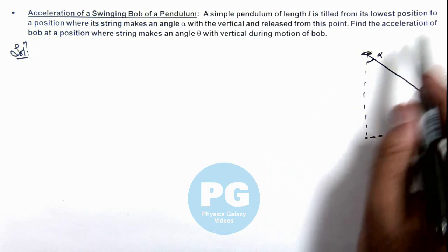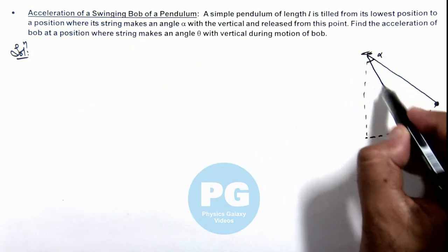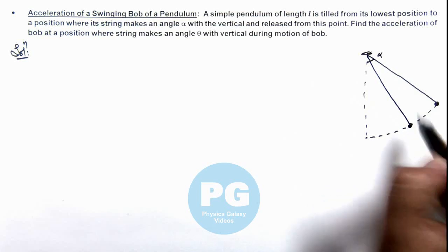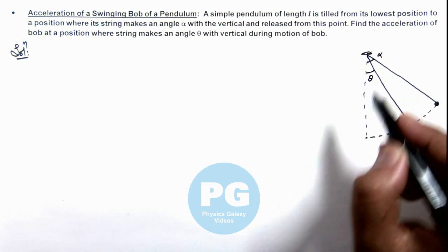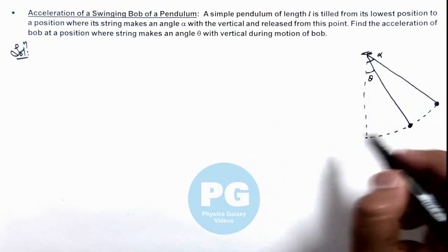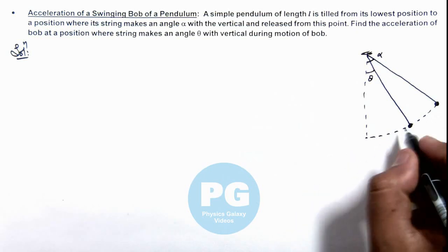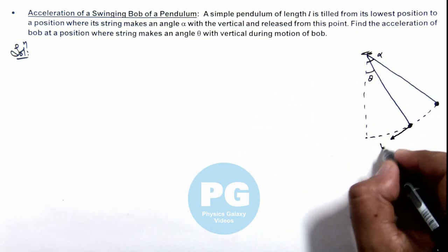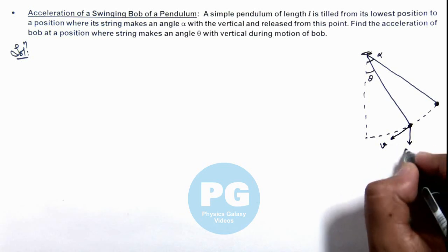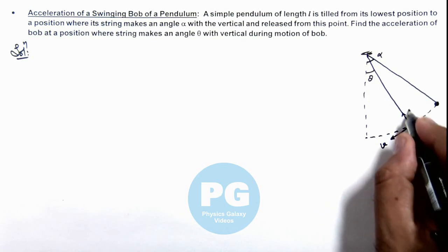And we are required to find the acceleration of the bob at a position where its string makes an angle theta with the vertical during this motion. At this point, the bob would be moving with a speed v. It is experiencing mg in the downward direction and a tension over here.